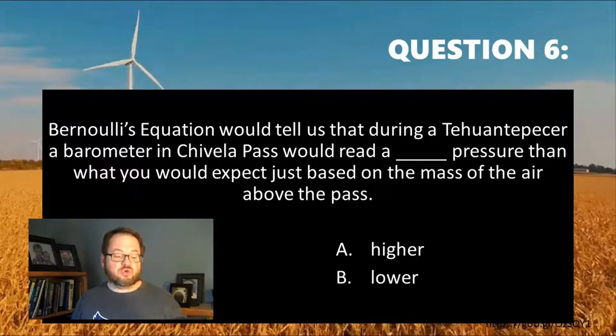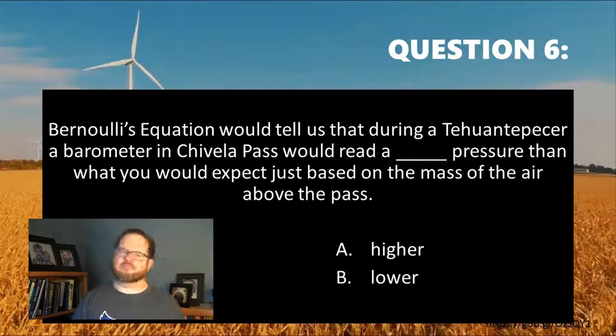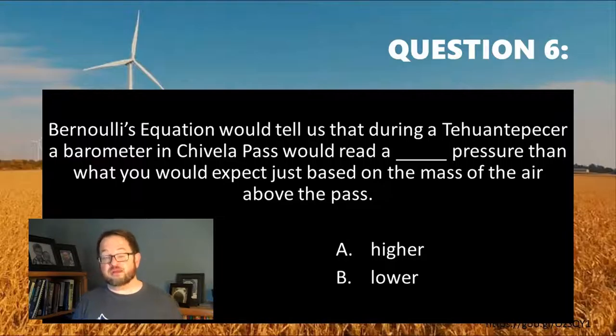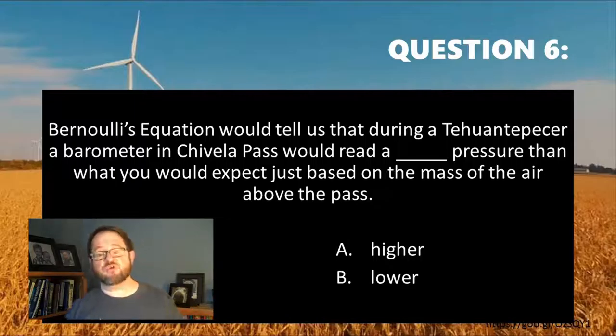Question six: Bernoulli's equation would tell us that during a Tehuantepecker, a barometer in Chevala Pass would read a blank pressure than what you would expect just based on the mass of the air above the pass. During a Tehuantepecker, if you knew the mass of the air above you, you'd think you would know the pressure, but in fact you wouldn't get quite that same pressure measured at a barometer. Would the pressure that you measure be higher or lower? Go ahead and make a choice from those two options and get a little feedback before you move on to question seven.